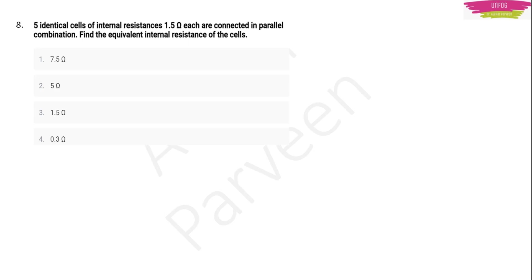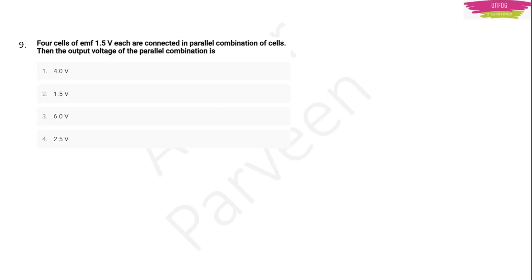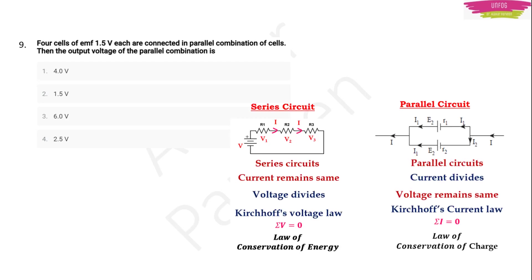Next: five identical cells of internal resistance 1.5 ohms each are connected in parallel. Equivalent internal resistance = r/n = 1.5/5 = 0.3 ohms. Next: four cells of EMF 1.5 volts each are connected in parallel — the output voltage is still 1.5 volts, because in a parallel combination the EMF remains unchanged. These are standard exam questions that test your understanding of series vs. parallel combinations.